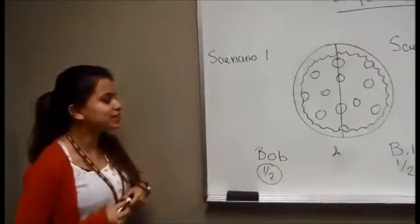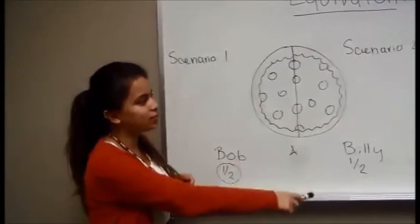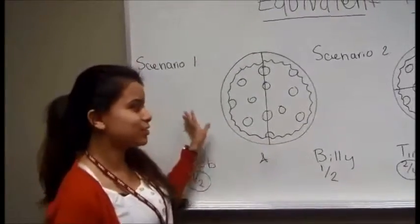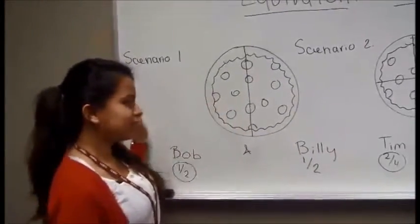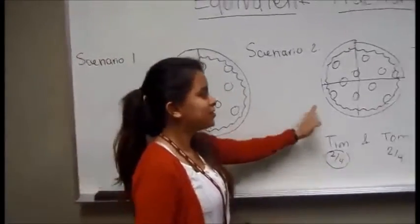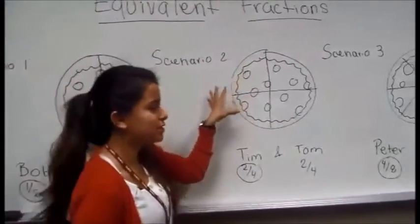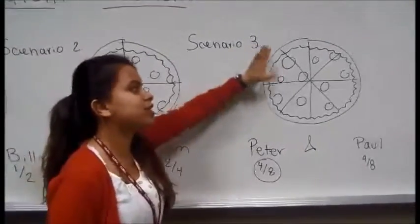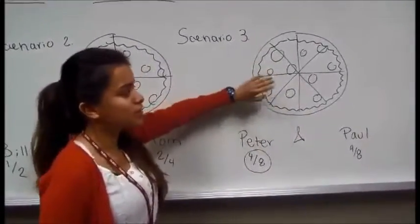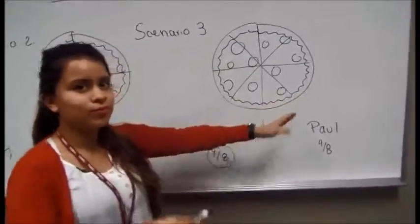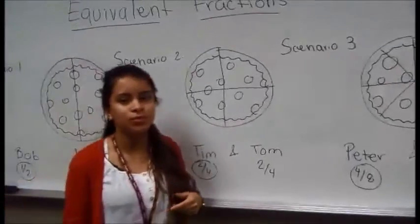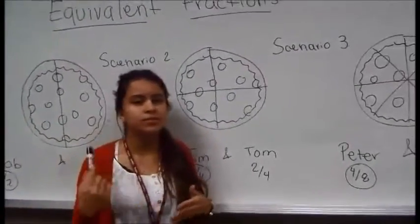We see that even though they each have a different number of slices, they still have the same amount. Bob is getting this side, Billy is getting this side, Tim is getting this side but with two slices, and Tom is getting this side with two slices. Peter is getting this side but with four slices, and the same for Paul. Just because they have a different number of slices doesn't mean that they're getting more pizza. It's just cut differently.